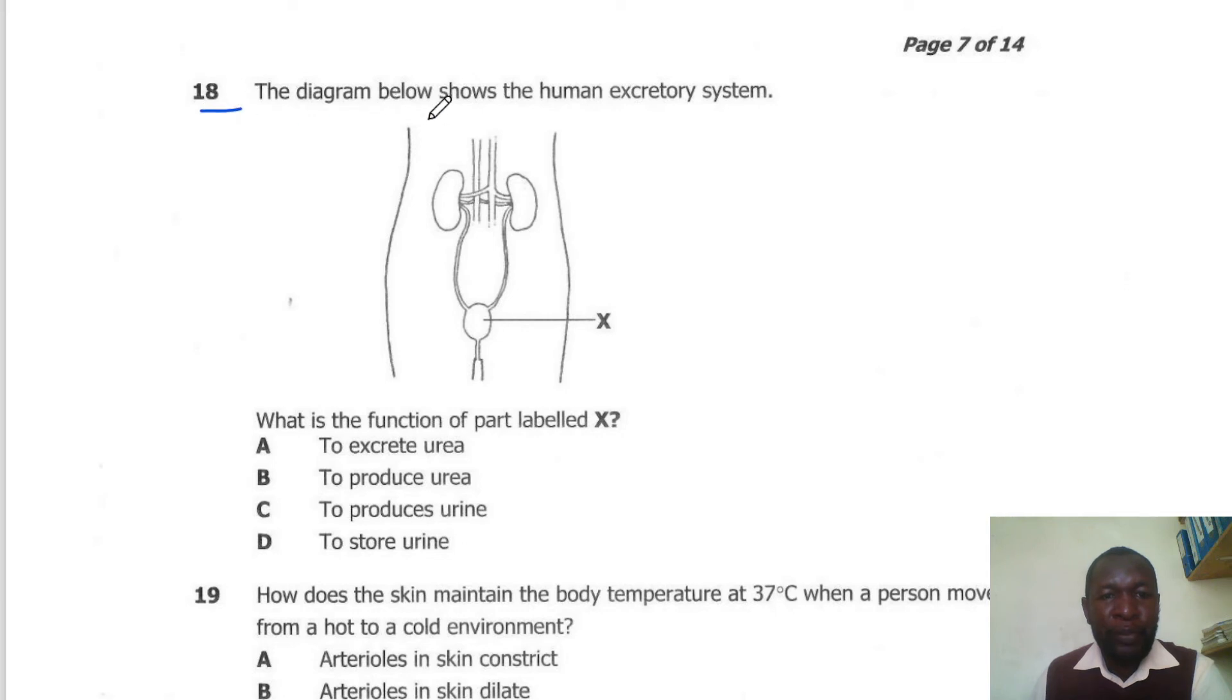Question 18. The diagram below shows the human excretory system. What is the function of the part labeled X? X is the urinary bladder and the function of the urinary bladder is to store urine. So the correct answer here is D.